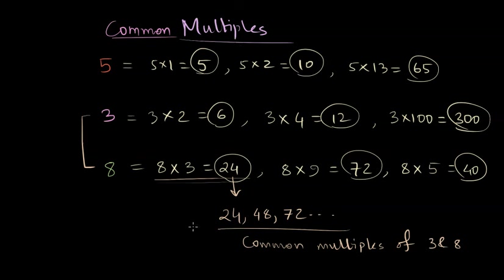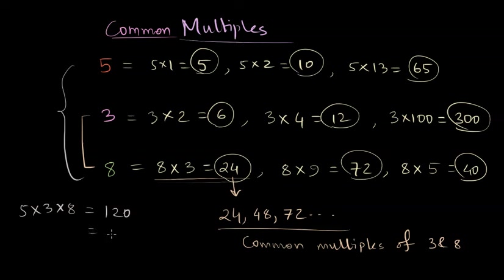Just remember there are many other common multiples of any two given numbers. If we want to find common multiples of 5, 3, and 8, a simple common multiple is the product of all three: 5 times 3 times 8 equals 120. We can check if 60 is also a common multiple of 5, 3, and 8 — in this case it's not. And 40 times 3 also doesn't work since 40 is not divisible by 3. But yes, we can find common multiples for any given numbers, and there are infinite common multiples.